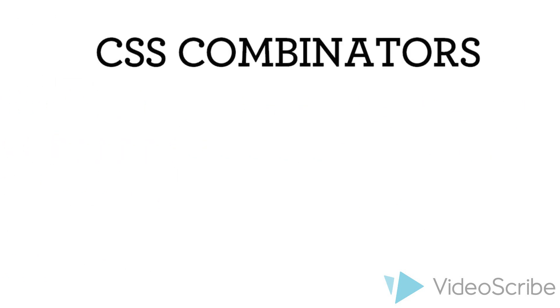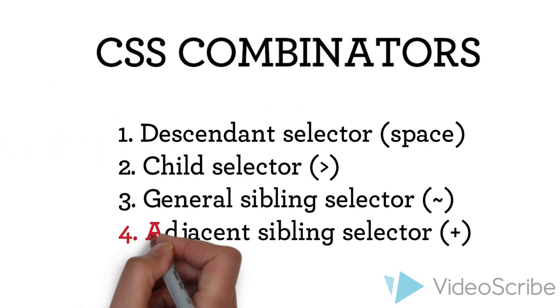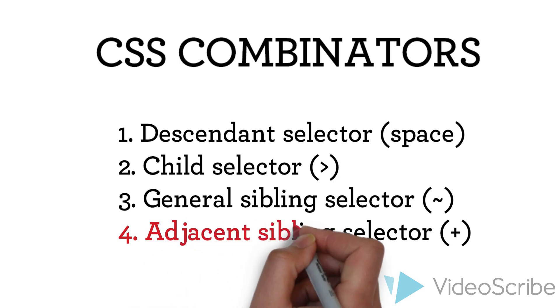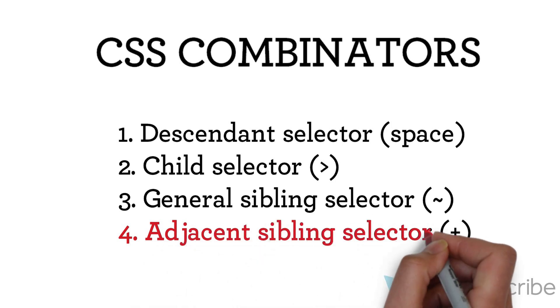The fourth and last combinator for today is called adjacent sibling selector. It is indeed, as the name might already suggest, similar to the general sibling selector. In other languages, it could also be translated as neighbor selector, which also gives a hint about its effect. The adjacent sibling selector is shown as a plus sign in CSS.